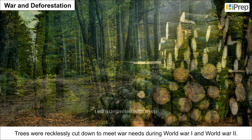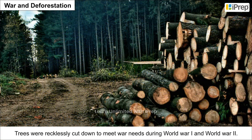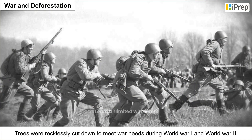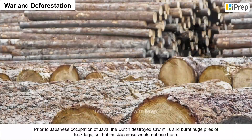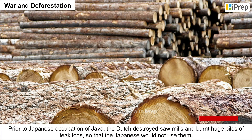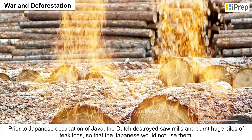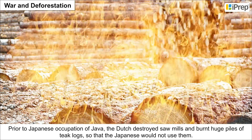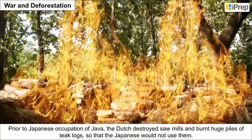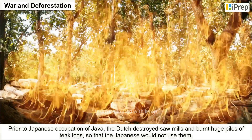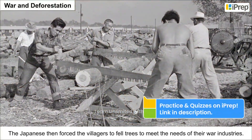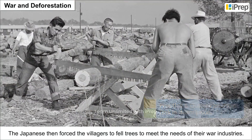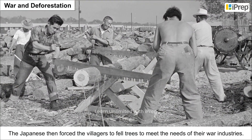War and deforestation: trees were recklessly cut down to meet war needs during World War One and World War Two. Prior to the Japanese occupation of Java, the Dutch destroyed sawmills and burnt huge piles of teak logs so that the Japanese would not use them. The Japanese then forced the villagers to fell trees to meet the needs of their war industries.